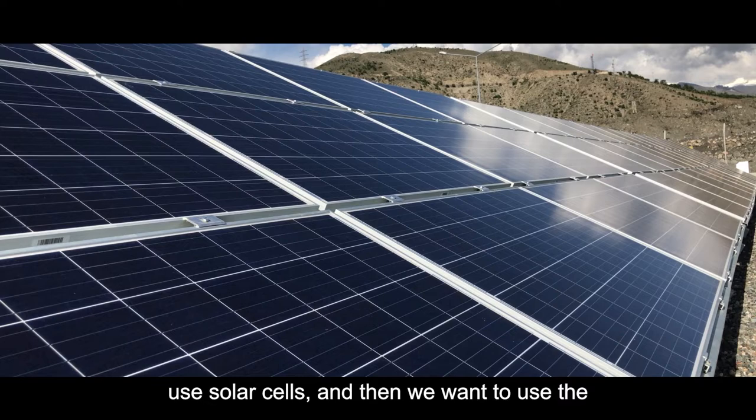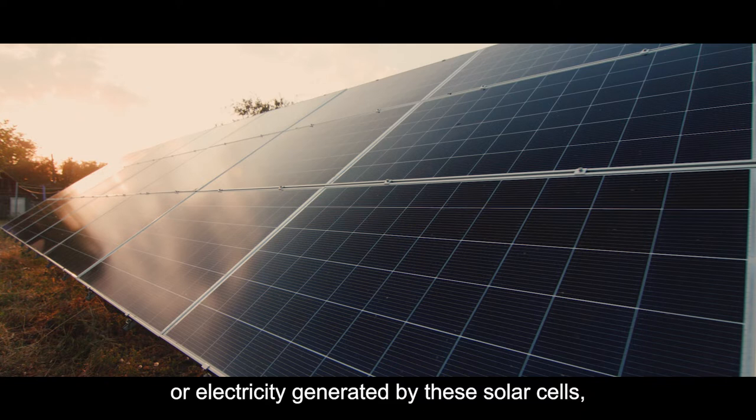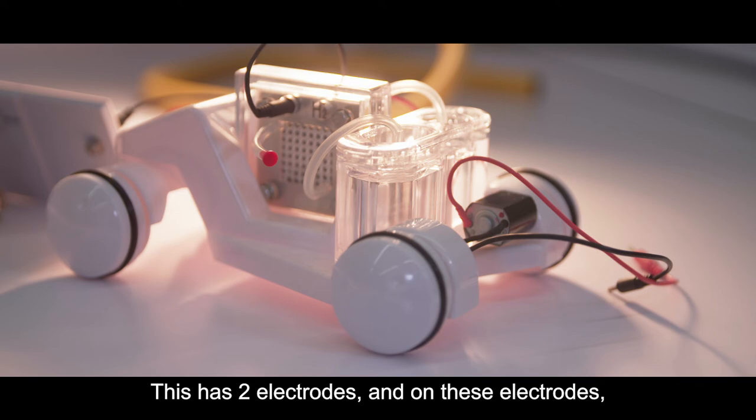We want to be able to take sunlight which is cheap and abundant, use solar cells, and then we want to use the electrical energy or electricity generated by these solar cells to produce hydrogen.